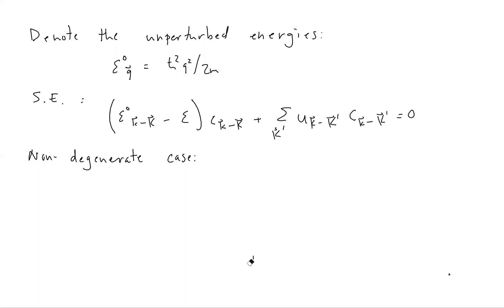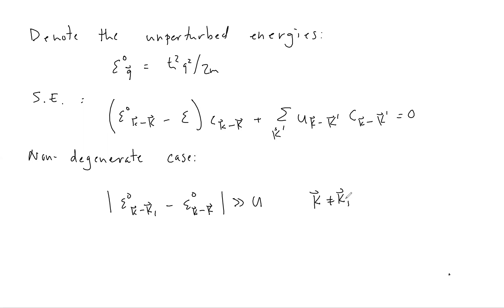In the non-degenerate case, E0(k minus K1) minus E0(k minus K) is much larger than U, where K is not equal to K1. We're imagining in the Schrödinger equation that we've fixed the big K to be K1, asking what happens to a particular energy level indexed by little k and K1. The unperturbed energy is not near any other energy E0(k minus K); by 'not near' we mean the difference is much larger than U, the typical magnitude of the Fourier coefficients of the potential.